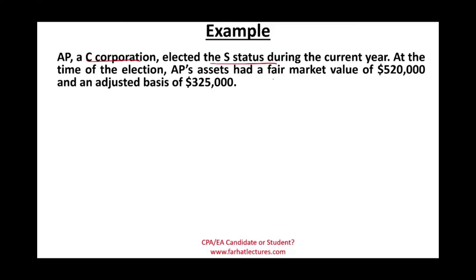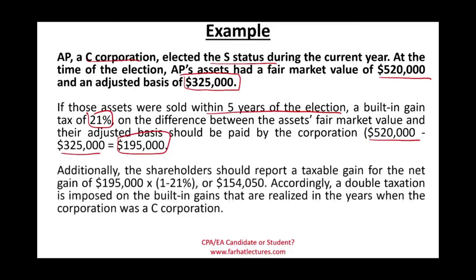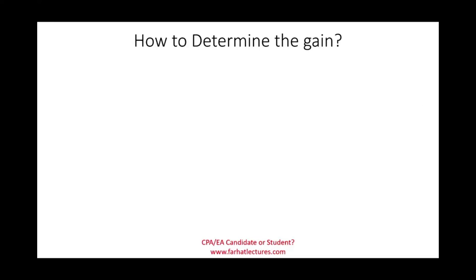Example: AP, a C corporation, elected S status during the current year. At the time of the election they had assets with a fair value of $520,000 and an adjusted basis of $325,000, giving a potential built-in gain. If those assets are sold within five years of the election, a built-in gains tax of 21% on the difference of $125,000 will apply. Additionally, shareholders report a taxable gain for the net gain. Double taxation is imposed on the built-in gain.